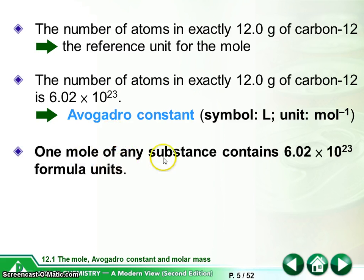So one mole of any substance, or one mole, just like 1 dozen equal to 12. After we have defined how much one mole represents, that is 6.02 times 10 to the power of 23, then we can do some simple counting.